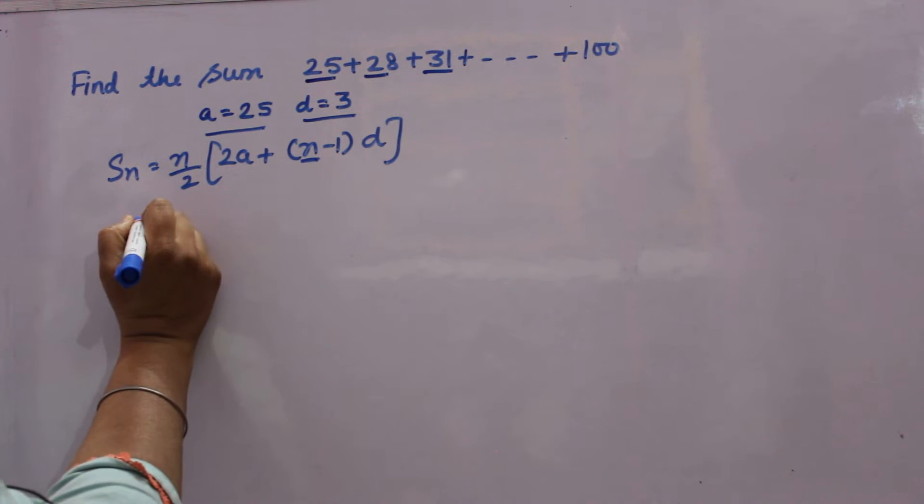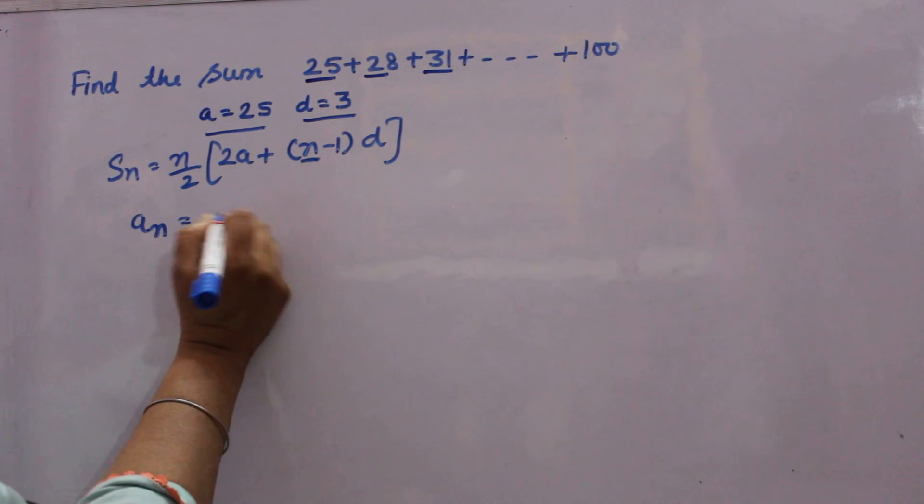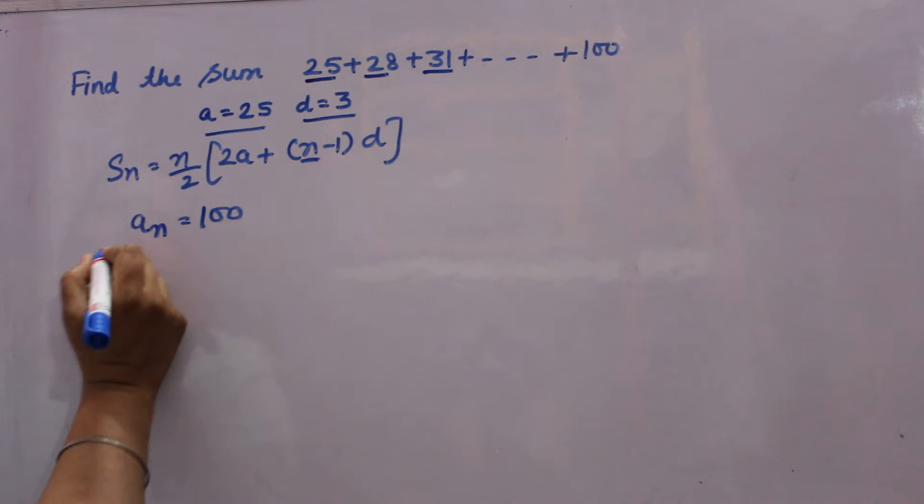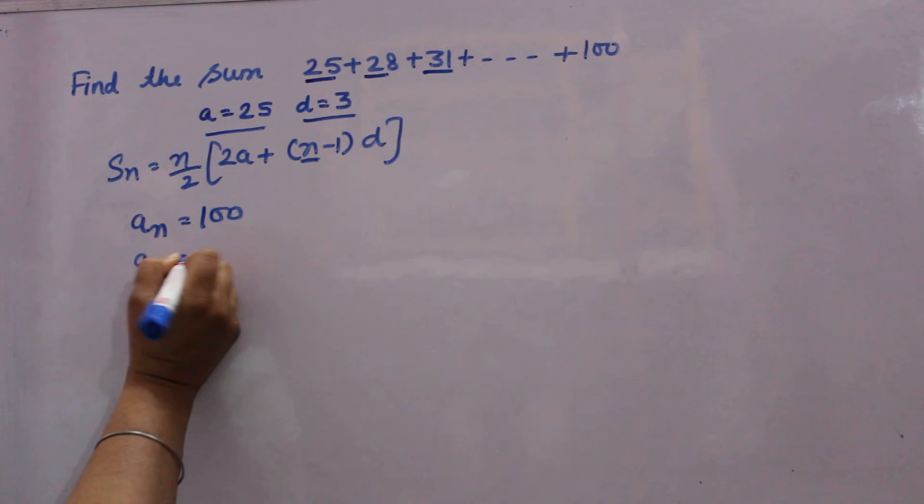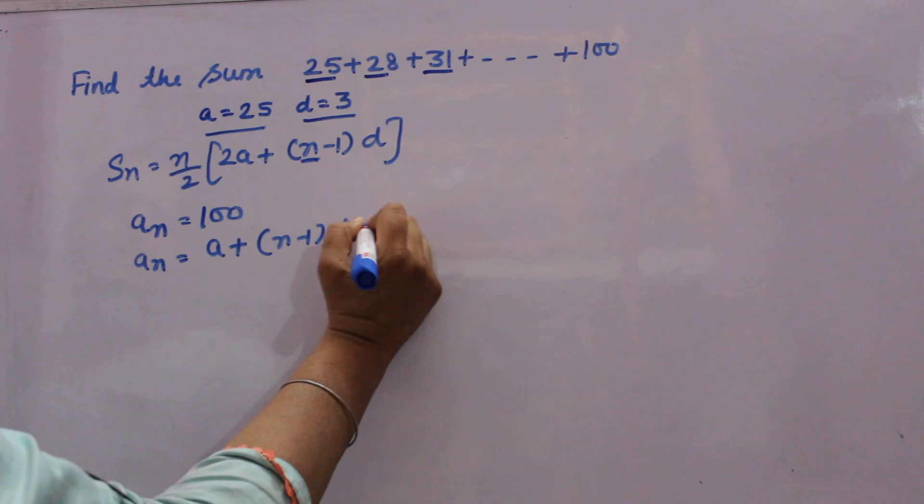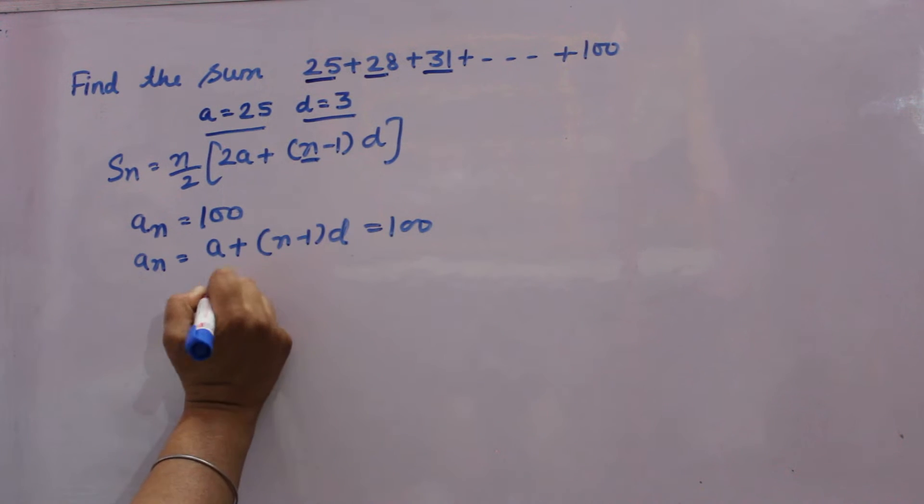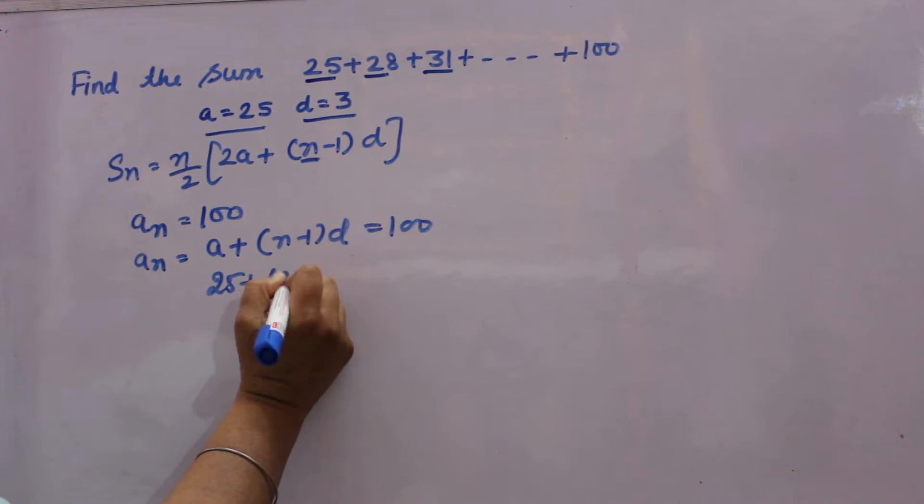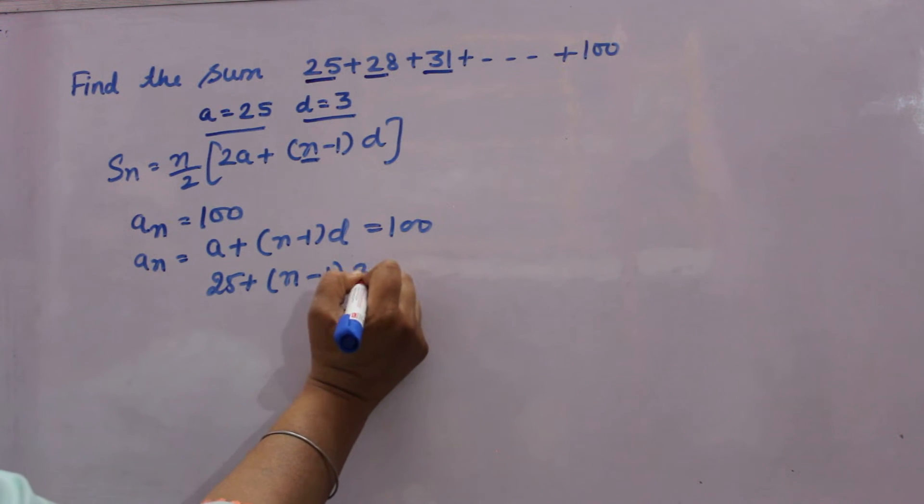So for N, you see, last term AN is given 100. AN formula is A plus N minus 1 into D, it is given 100. A is 25, so write N as it is minus 1. D is 3.